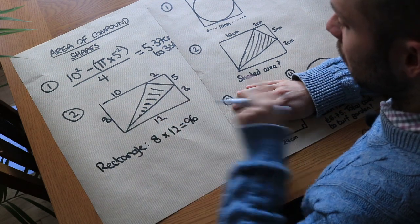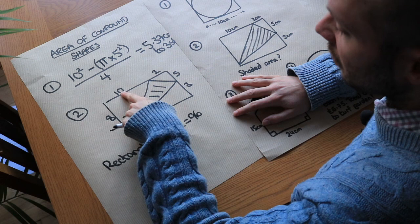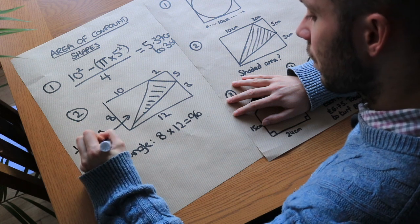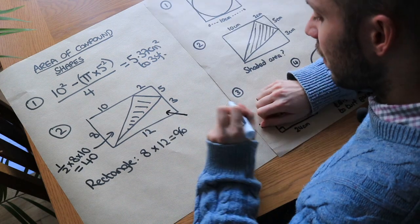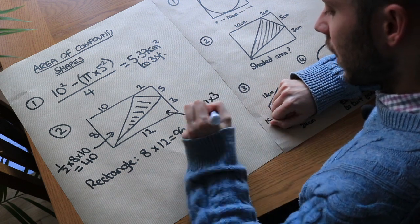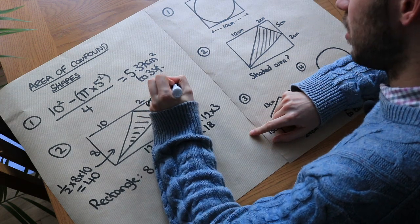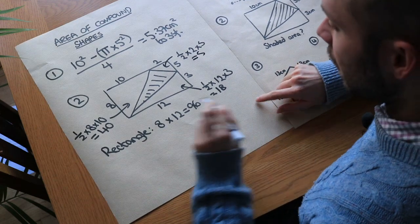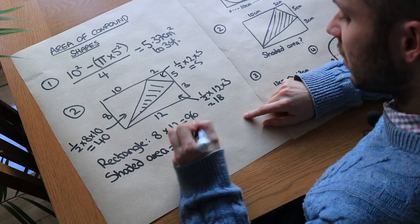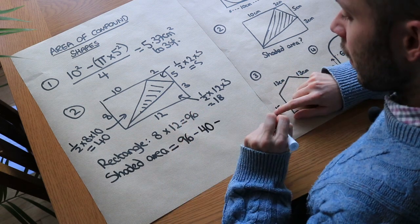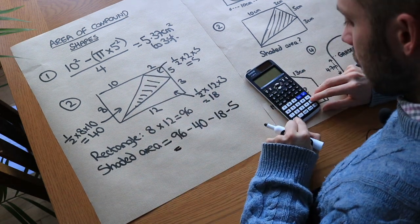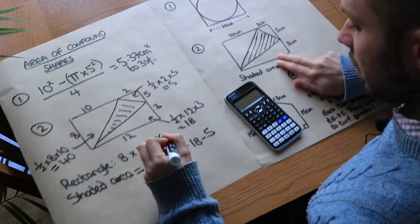Now let's find the area of each of the triangles around the central triangle. This triangle: half times base times height, so half times 8 times 10, which equals 40. This area is half times 12 times 3, which equals 18. And this area is half times 2 times 5, which equals 5. So the shaded area is: start with the rectangle 96, subtract triangle 40, subtract triangle 18, subtract triangle 5 — giving us 33 centimetres squared.